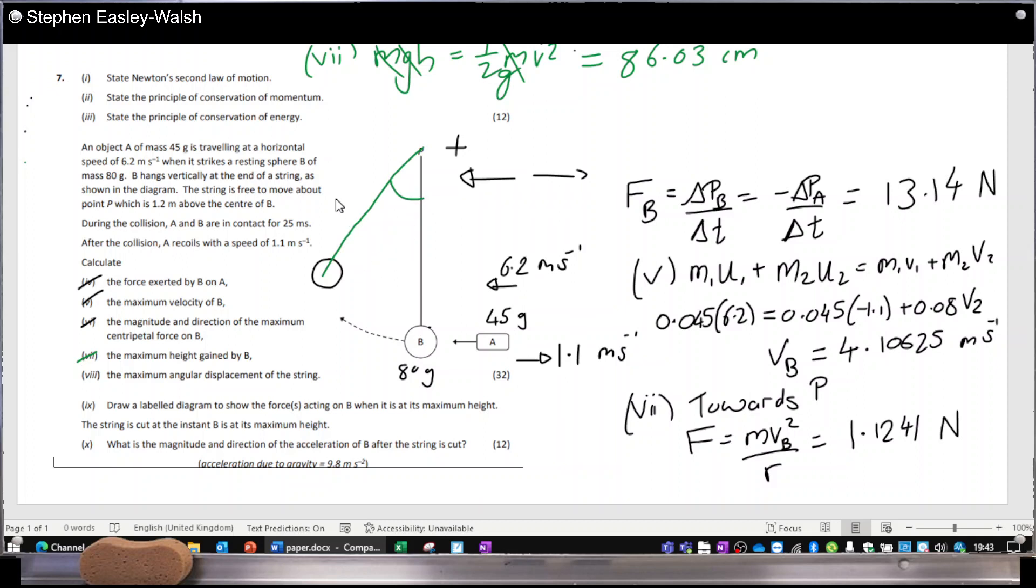The maximum angular displacement of the string. Right, okay, so that's this angle here. So we know that this length is 1.2 and we know that this height is the 0.86, so we can work out this height as the 1.2 minus that 0.86 answer. So it will just be a bit of trigonometry. That angle A - that's adjacent over hypotenuse - that'll be cos inverse. That is 0.3339 etc. over 1.2. So that's 73.55 degrees.